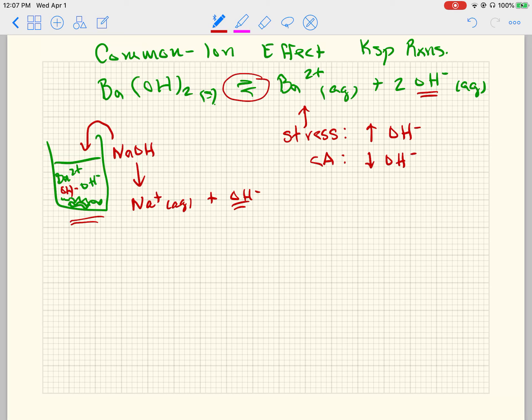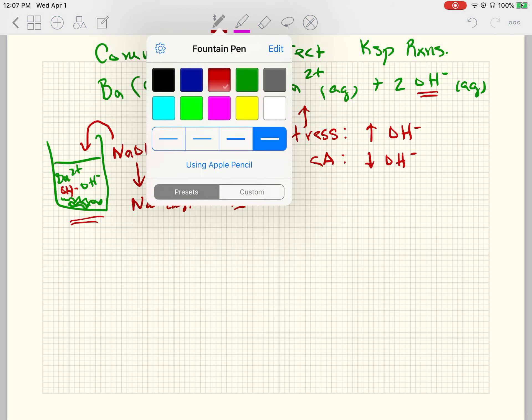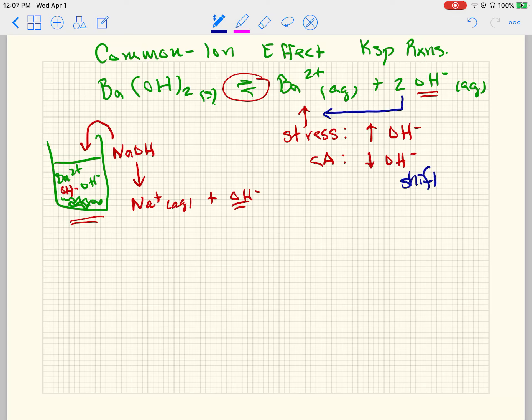And so to do that, if I need to decrease it, I've got to consume it. So that means that we will have a shift, and that shift will occur to the left. So it shifts left in this reaction in order to decrease the hydroxide. And when it does that, it produces more barium hydroxide.